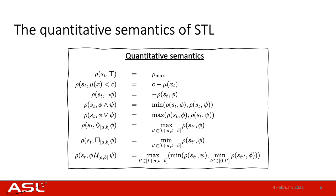Let's look at a few of these equations to get a better intuition of what robustness is. Looking at the predicate mu of x less than c, the corresponding robustness formula just measures how much smaller mu of x is compared to c. A positive value here means that the predicate is satisfied, while a negative value means that the predicate was violated.